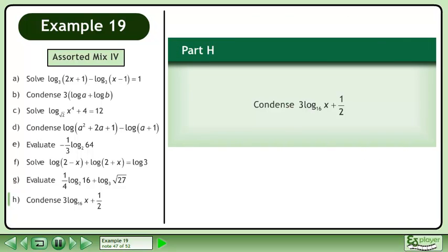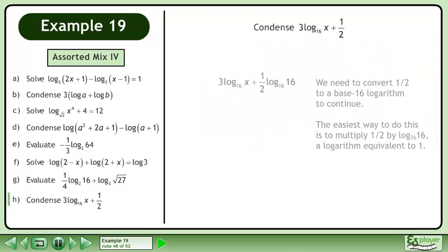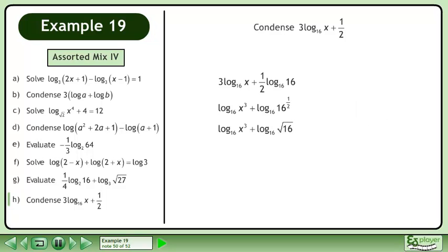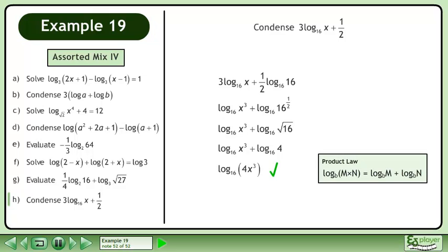In Part H, condense 3 times the base 16 logarithm of x plus 1 half. We need to convert 1 half to a base 16 logarithm to continue. The easiest way to do this is to multiply 1 half by the base 16 logarithm of 16, a logarithm equivalent to 1. Condense using the power law in reverse. 16 raised to the power of 1 half equals root 16. Root 16 equals 4. Condense using the product law in reverse. The answer is the base 16 logarithm of 4x cubed.